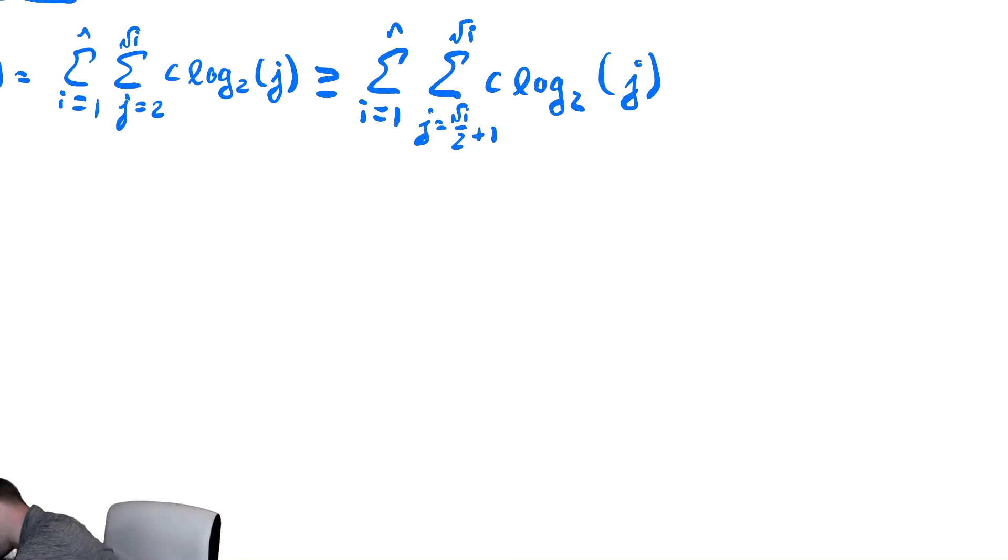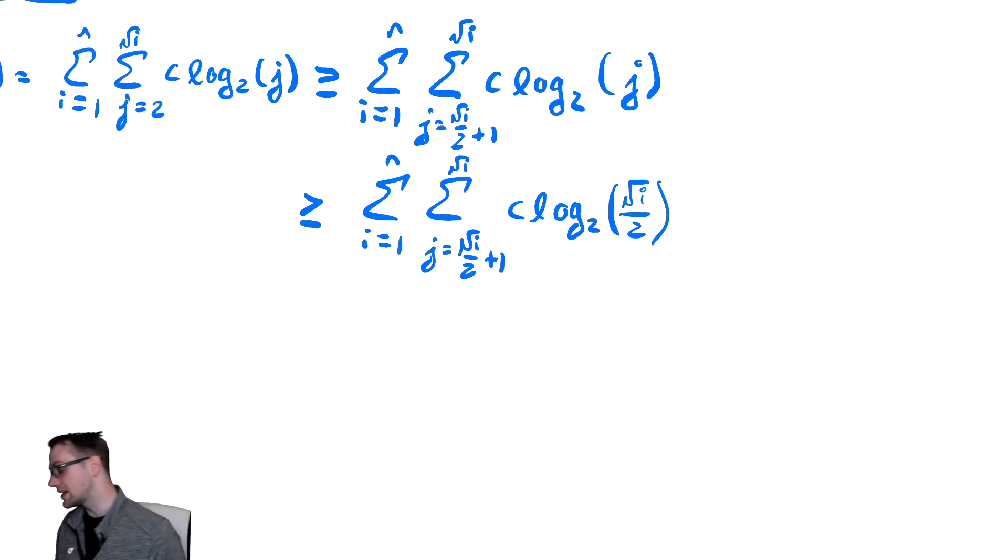We then replace j with radical i over two to make it yet smaller still. So that's one to n. And then j going from radical i over two plus one to radical i of c log base two of radical i over two.